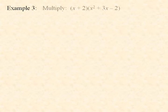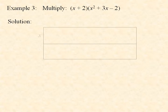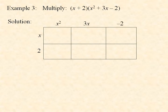Example 3: Multiply the quantity x plus 2 by the larger quantity x squared plus 3x minus 2. We split the width of our large rectangle into two pieces, x and 2, and we split the length into three pieces, because there are three terms in the second polynomial. Then we find the areas of the individual rectangles: x times x squared is x cubed; x times 3x is 3x squared; x times negative 2 is negative 2x; 2 times x squared is 2x squared; 2 times 3x is 6x; and 2 times negative 2 is negative 4.